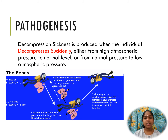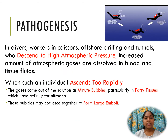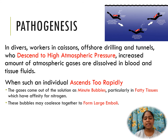Pathogenesis of decompression sickness. It is produced when the individual decompresses suddenly, either from a high atmospheric pressure to a normal level, or from a normal level to a low atmospheric pressure. In divers, workers in caissons, offshore drillers, and tunnel workers who descend to high atmospheric pressure, increased amounts of atmospheric gases like nitrogen, oxygen, and carbon dioxide are dissolved in the blood and tissue fluids. When such an individual ascends too rapidly — coming to normal level suddenly from high atmospheric pressure — the gases come out of solution as minute bubbles, particularly in the fatty tissues which have high affinity for nitrogen. These bubbles may coalesce together to form large emboli.